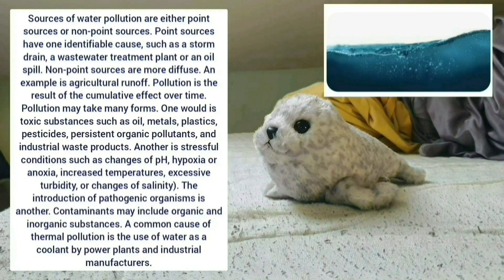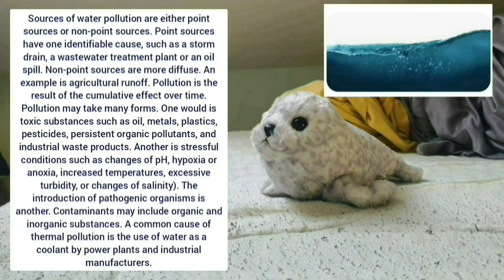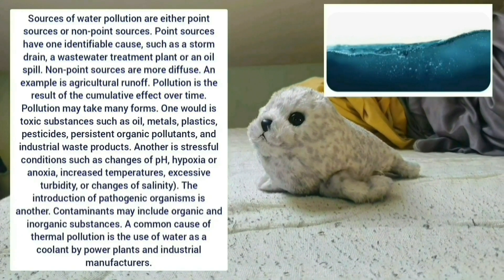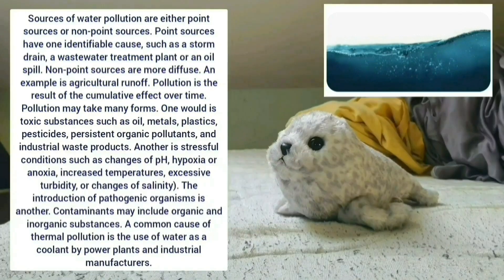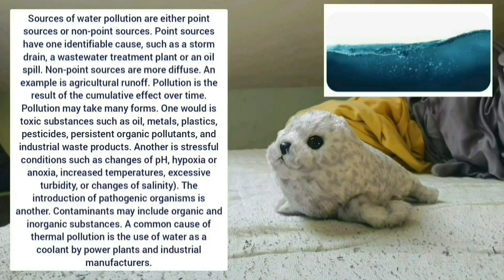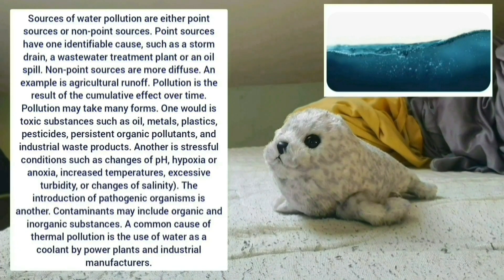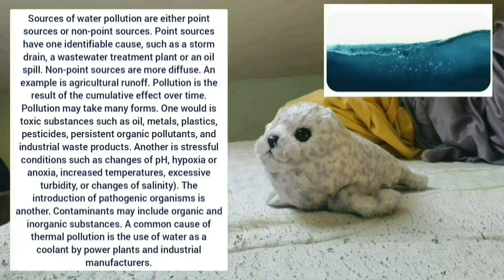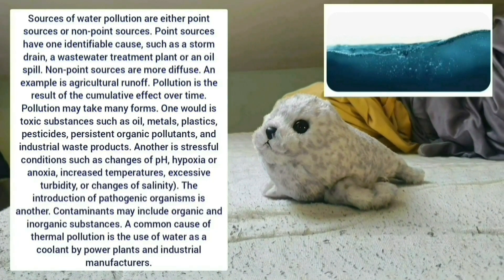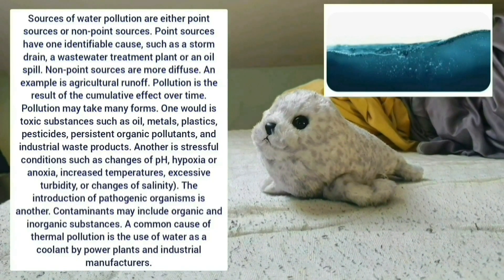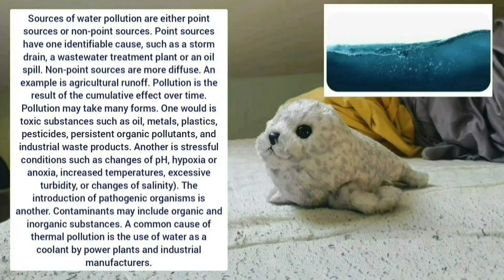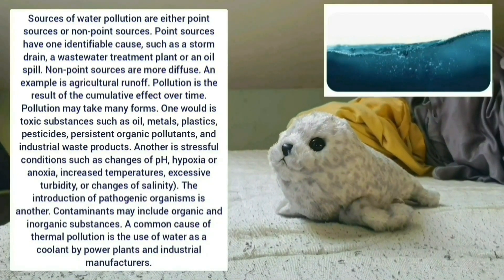One form is toxic substances such as oil, metals, plastics, pesticides, persistent organic pollutants, and industrial waste products. Another is stressful conditions such as changes of pH, hypoxia or anoxia, increased temperatures, excessive turbidity, or changes of salinity. The introduction of pathogenic organisms is another form.